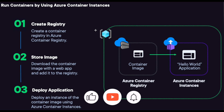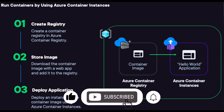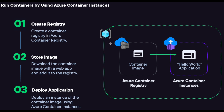In this tutorial, we will first create an Azure Container Registry, then create an image in that registry, and then run that image in our Azure Container Instance. The creation of the image and the container registry will be done from the Azure Cloud Shell CLI, but running the image in the container instance will be done in the portal.